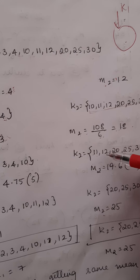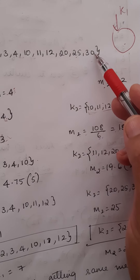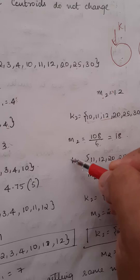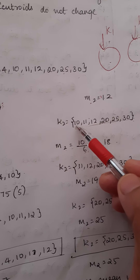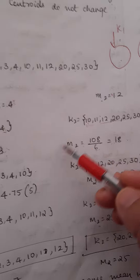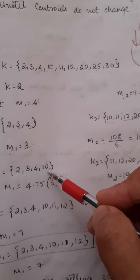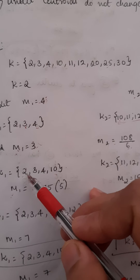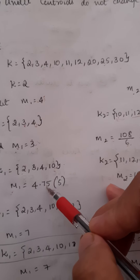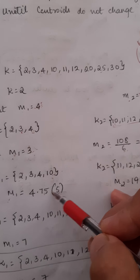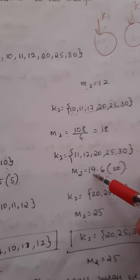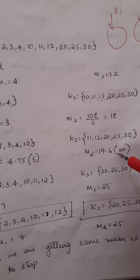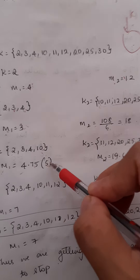12 is closer to 18, and all remaining numbers are closer to 18, so they come into the second cluster. Notice that earlier, in iteration 1, 10 was in the second cluster — now 10 has moved to the first cluster. In the third iteration, I recompute the mean. The centroid of the first cluster is the average of 2, 3, 4, and 10, which is 4.75, rounded to 5. For the second cluster, I get approximately 19.6, rounded to 20.